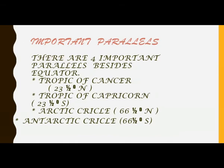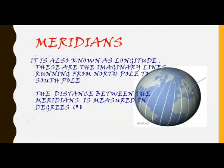This is how the parallels are numbered. Now let us learn about meridians. Meridians are also known as longitude. These are the imaginary lines that run from the north pole to the south pole. As you can see in the picture clearly, you can see the lines running from the north pole to the south pole — these are called meridians.